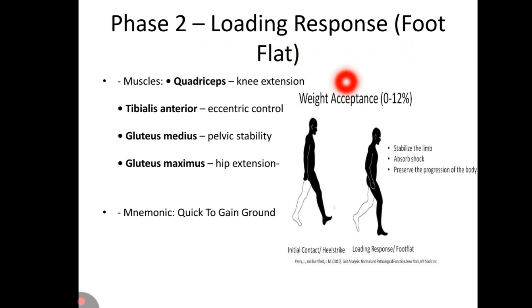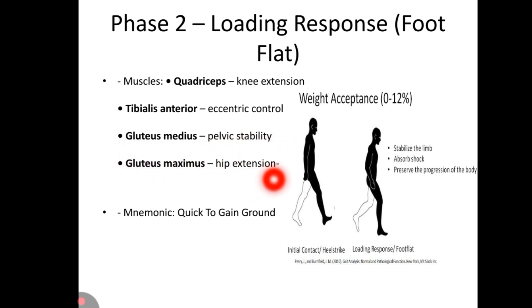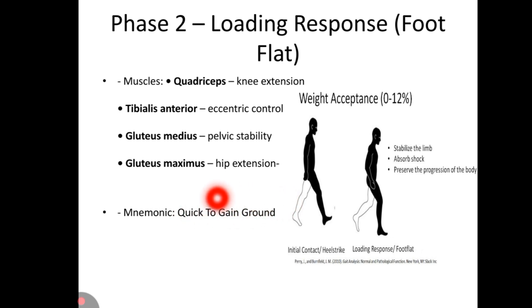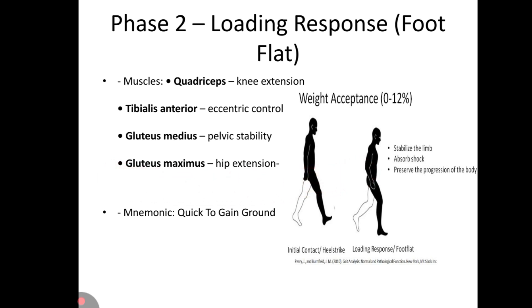Phase 2 is loading response — foot flat. Muscles acting in loading response are quadriceps for knee extension, tibialis anterior for eccentric control, gluteus medius for pelvic stability, and gluteus maximus for hip extension. The mnemonic is 'Quick To Gain Ground': Q for quadriceps, T for tibialis anterior, G of Gain for gluteus medius, and G of Ground for gluteus maximus. This phase helps stabilize the limb, absorb shock, and preserve the progression of the body.